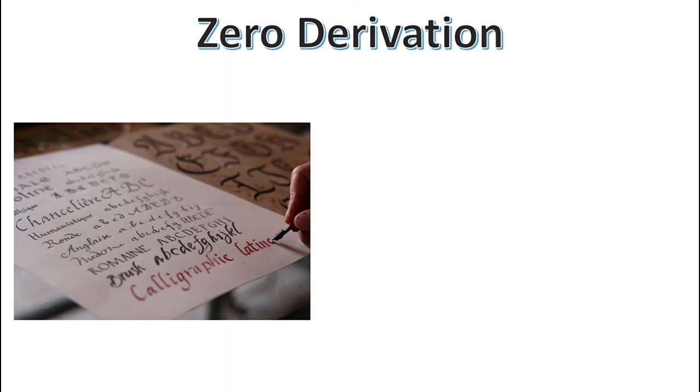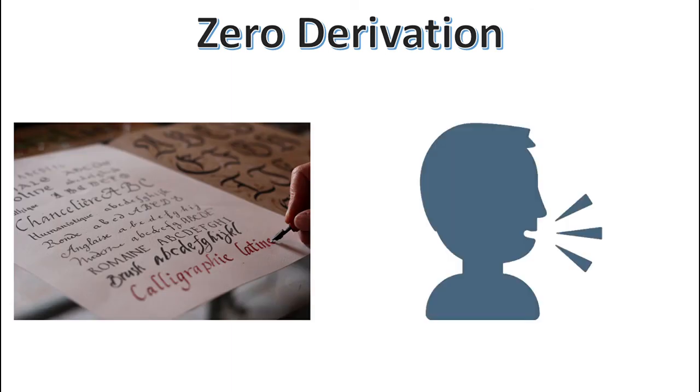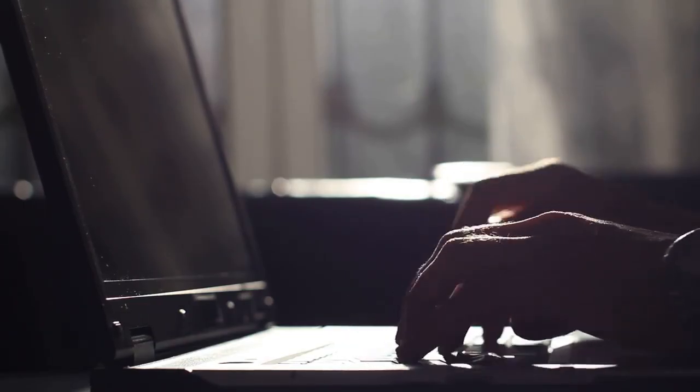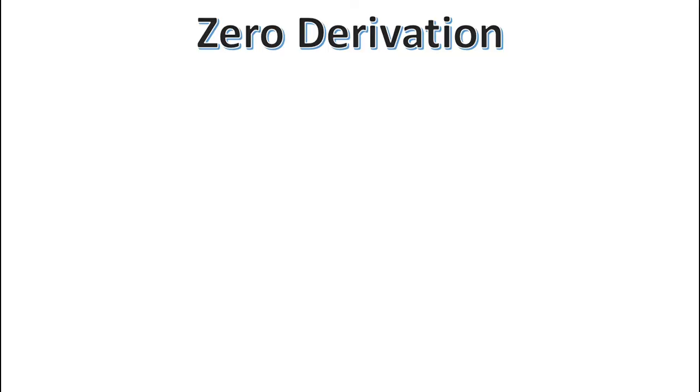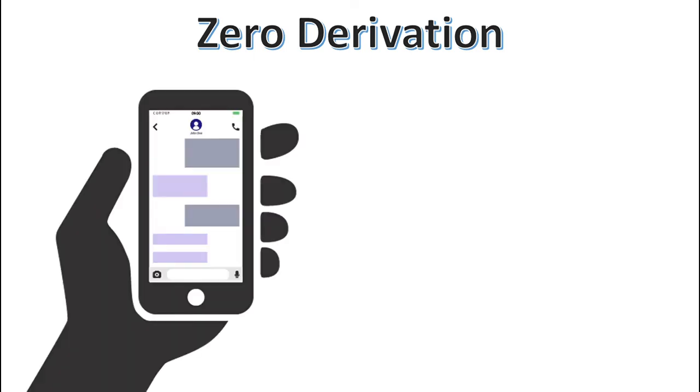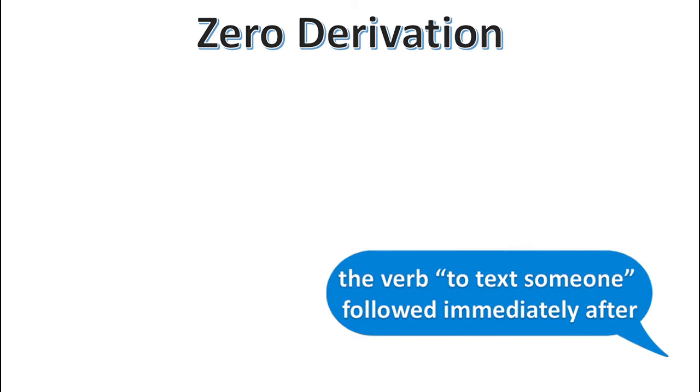One of the more peculiar aspects of English derivational morphology is called zero derivation, or zero affixation — derived forms that do not differ in their orthography but differ in their syntactic category. In fact, the majority of short nouns in English undergo zero affixation to become verbs. Take these examples: 'a message' or 'to message someone'; 'a text' or 'to text someone'; 'a phone' or 'to phone someone.' You can tell how incredibly productive this derivational pattern is by how quickly zero-affixed forms appear following the first usage of the root. Immediately after the noun 'text' was coined to refer to a text message, the verb 'to text someone' followed immediately after.